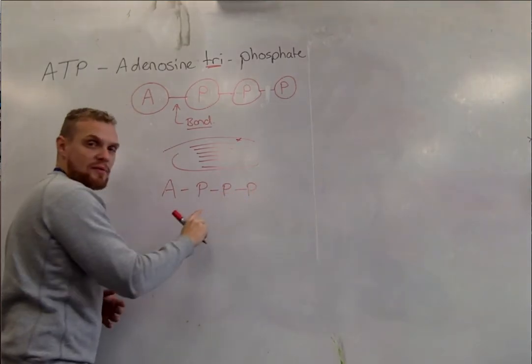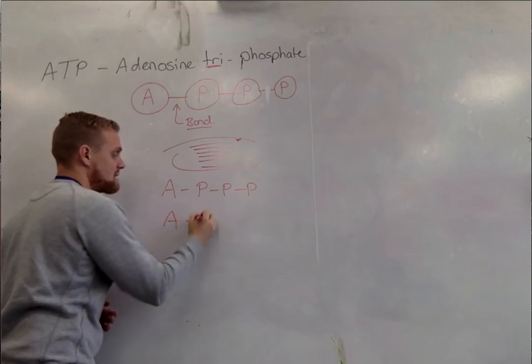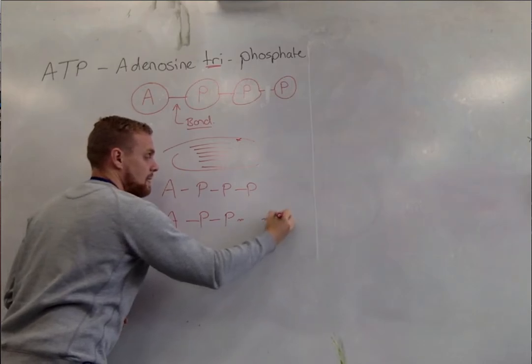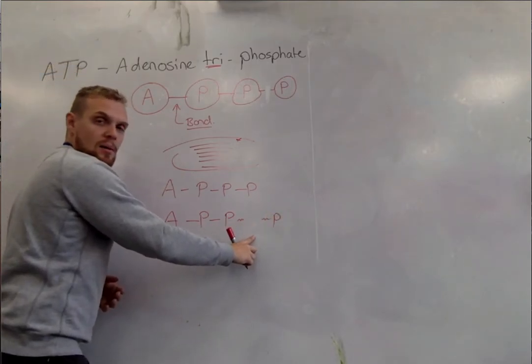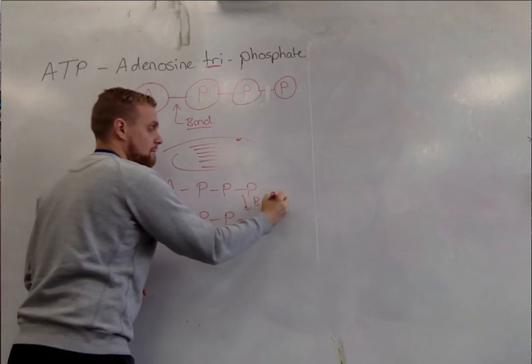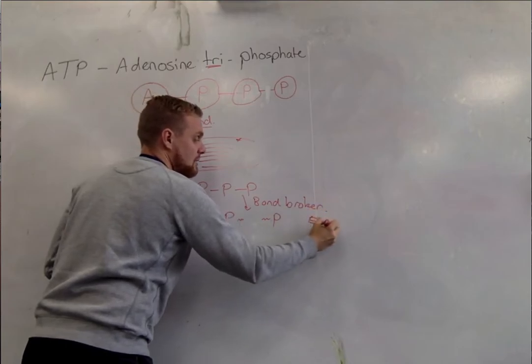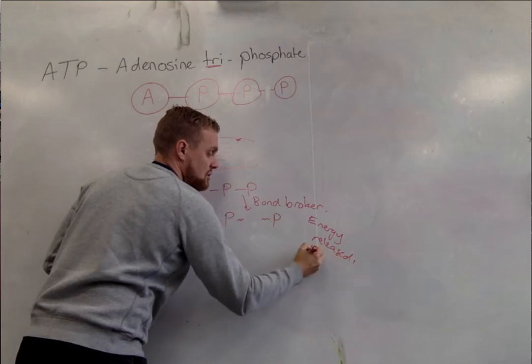So we have adenosine triphosphate. And the triphosphate, as we said in our previous video, becomes adenosine diphosphate with that final phosphate having its bond broken and energy released to move a muscle.